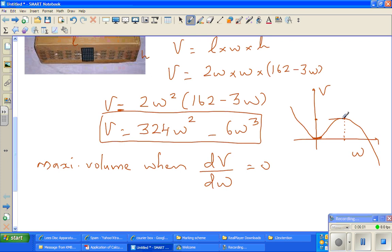If you draw a tangent at this line, the gradient would be zero. At maximum volume, the gradient at that point is 0. Therefore, dV by dW, when you differentiate, you drop the power down and decrease the power by 1. So 324 times 2 is 648W minus 18W squared.